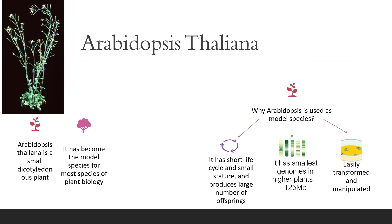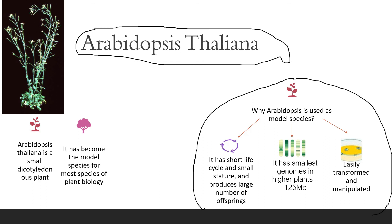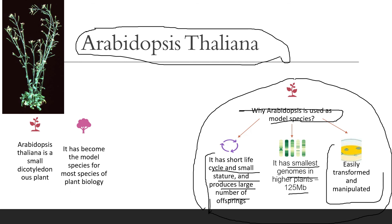Arabidopsis thaliana is used as a model species — it is generally used for genome experimentation and observing genes across different genome types. It is used as a model species because it has a short life cycle, small stature, and produces a large number of offspring. It also has the smallest genome among higher plants at about 125 Mb and is easily transformed and manipulated.